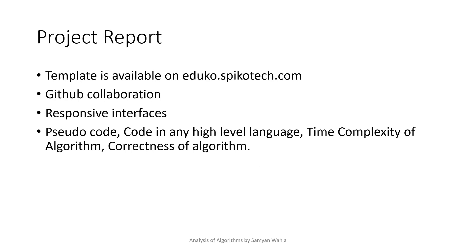At the end of the semester, you will be submitting a project report, for which a template is available on the course website. You have to provide details of your GitHub collaboration. The graphical user interfaces of your application should be responsive. You will also provide pseudo-code, code in any high-level language, the time complexity of the algorithm, and the correctness of the algorithm. Details on the number of members and other requirements can be found on the course website.